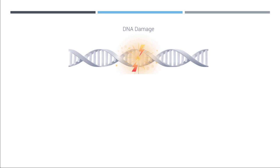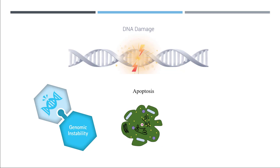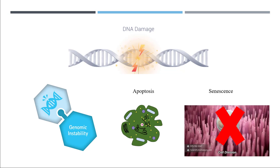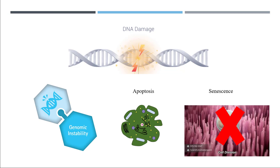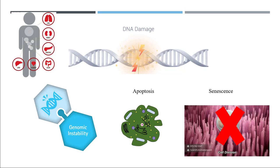If our body doesn't have any repair system and any damage occurs, what will happen? We will have genomic instability. The cell might go into a process called apoptosis, or cell death. Or if it's not going into cell death, it might lose the process of cell division, and losing cell division is called senescence.